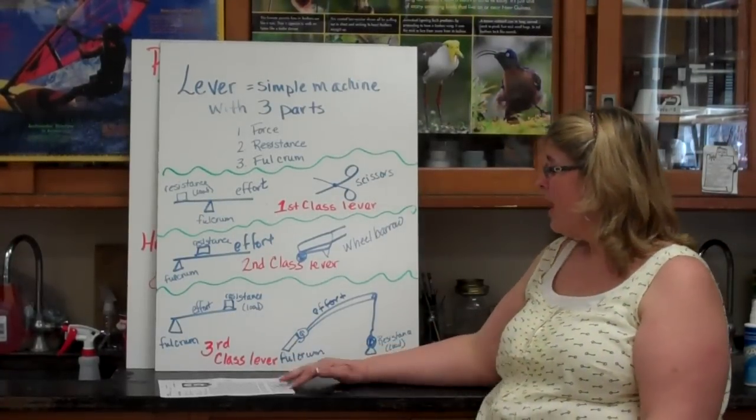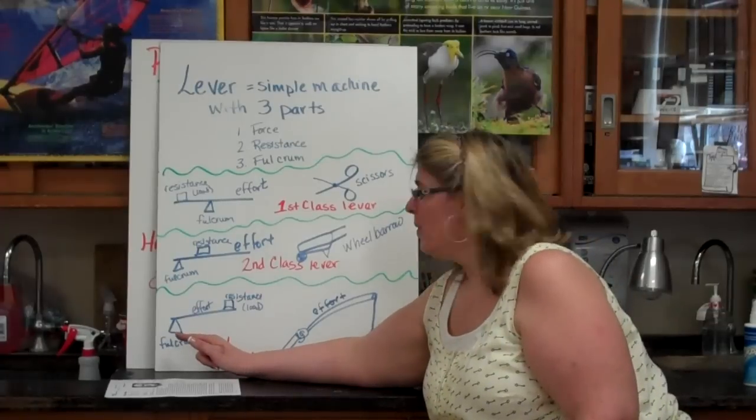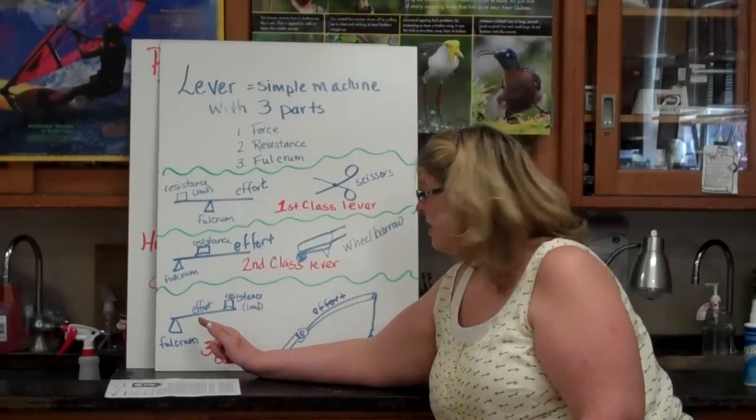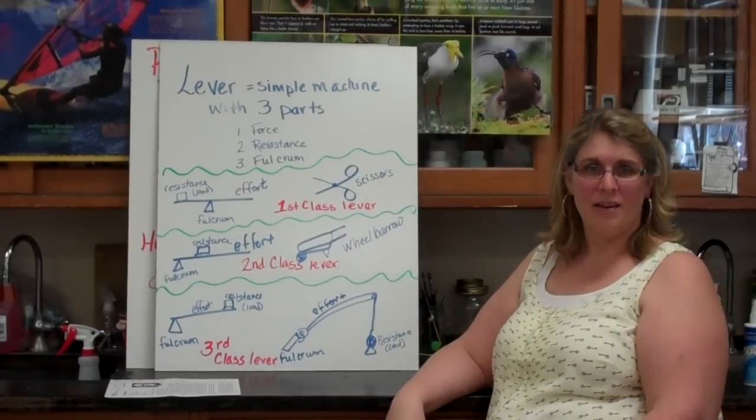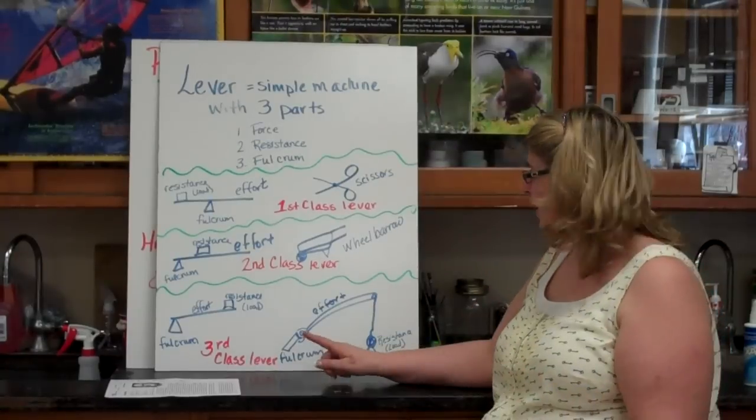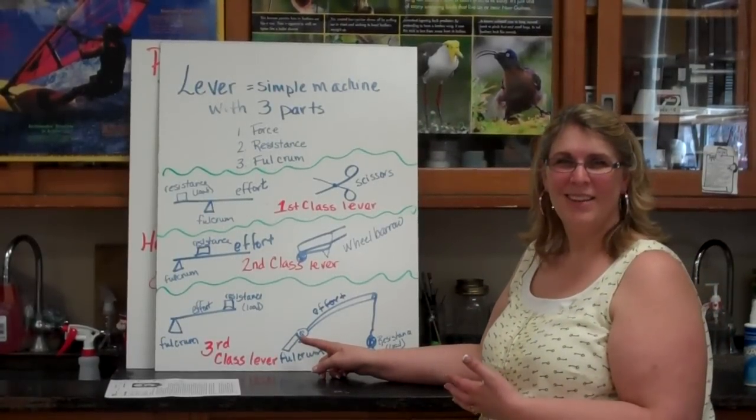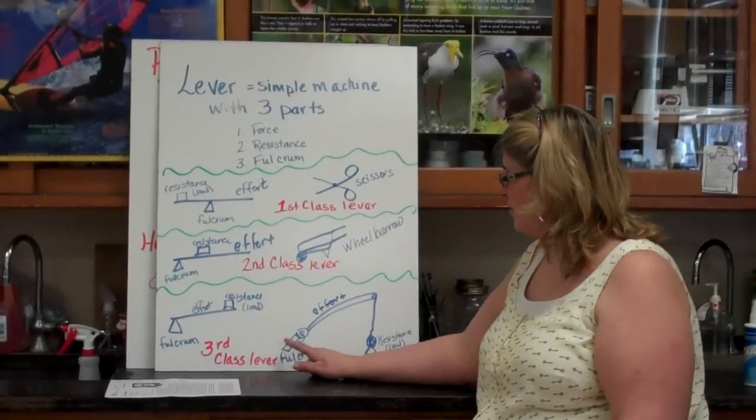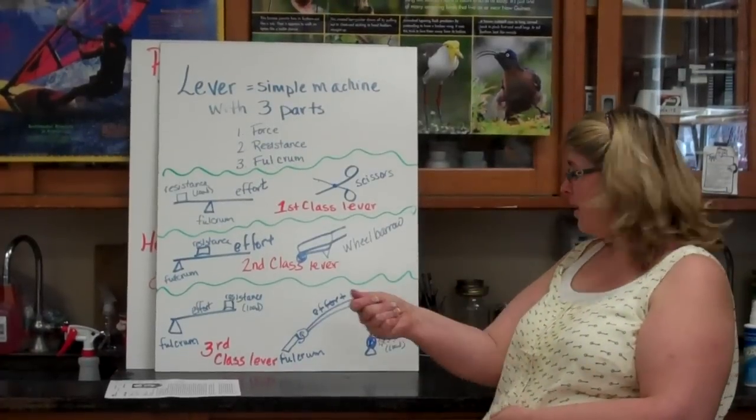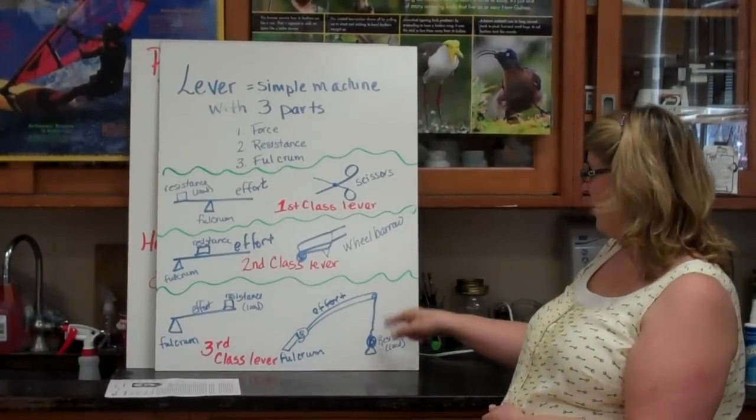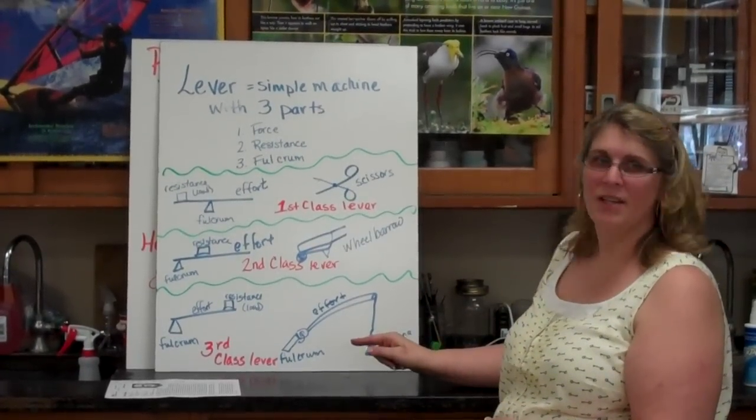A third class lever has the fulcrum still at one end, the effort's in the middle, and the resistance is on the end. When I think about that, I think about my fabulous looking fishing pole. You've got your fulcrum down here, your effort's in the middle, your load is that great big fish that you're going to catch.